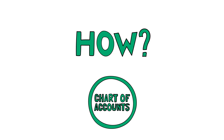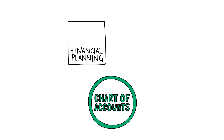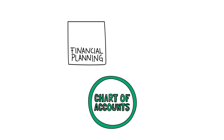So, how does the project team use the chart of accounts in practice? First, during the planning phase, as the team develops the budget, assigning each project income source and expenditure a code from the chart of accounts.